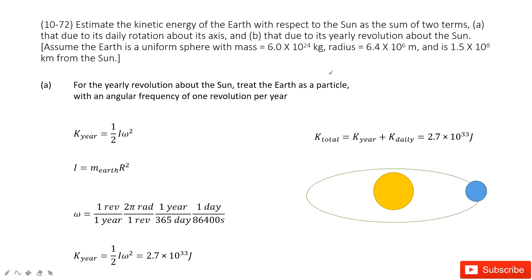The second part, we need to find kinetic energy for yearly revolution about the Sun. So for this, the rotational motion around the Sun. For this system, we consider the Earth—the Sun is at the center. The Earth does the rotational motion.